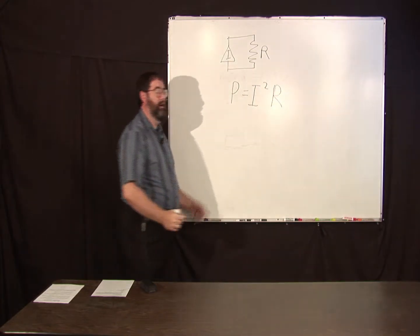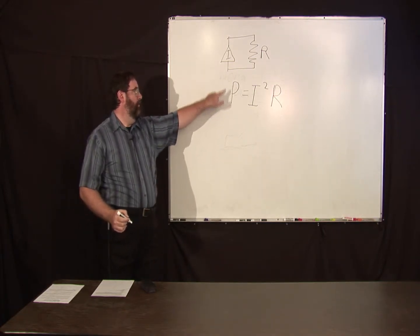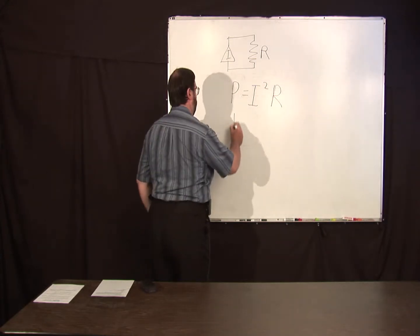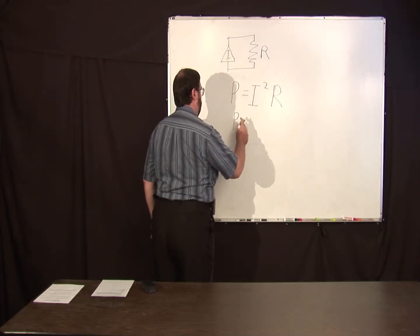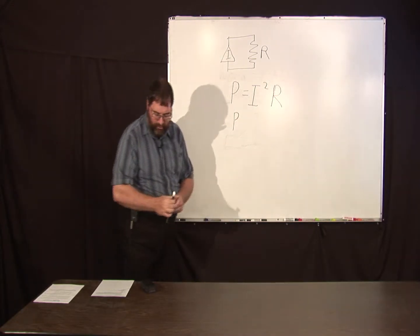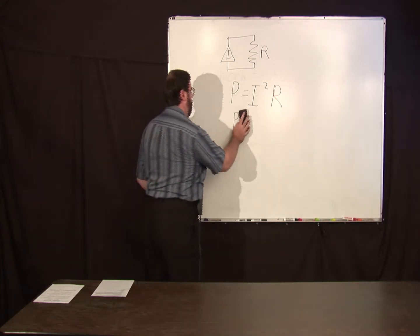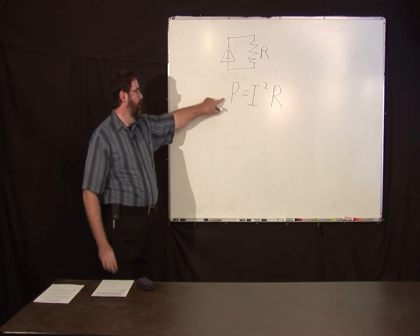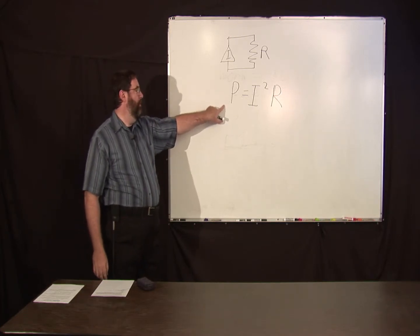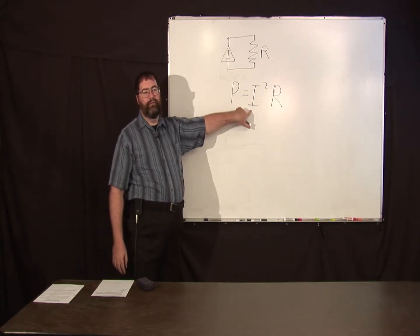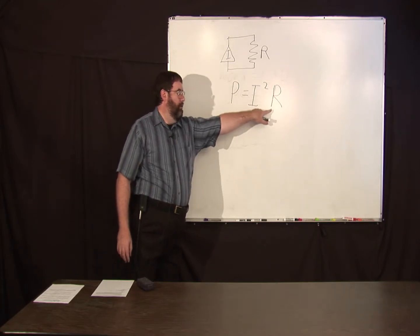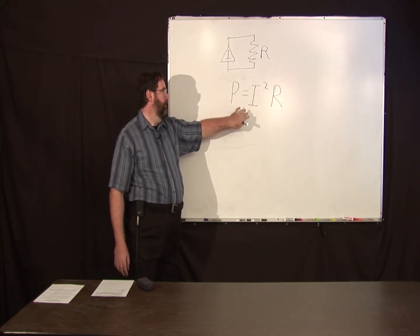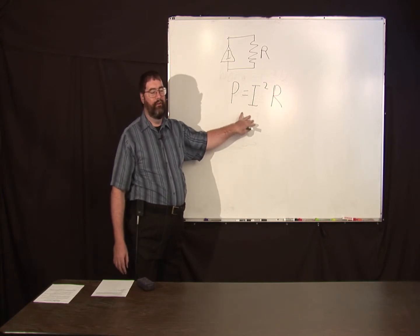We talked about this in a previous podcast. Power delivered to a load is this. The important thing is that you can very precisely - current is one of the SI units. You can measure resistance precisely, you can measure current precisely. This is one of the most precise measurements of power we can make.